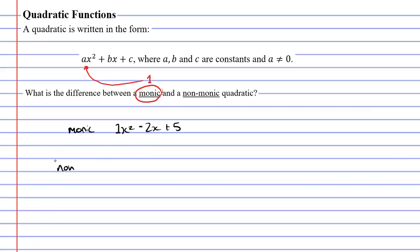A non-monic quadratic is basically all your other quadratics. So you could have 2x squared minus 3x plus 1, or you could have negative x squared plus 2x minus 5, and so on. Some of you might be looking at this quadratic here and thinking, is this a monic quadratic? It actually does have a 1 in front of the x squared. This is technically negative 1 x squared plus 2x minus 5. But when we say monic, it has to be positive 1. So negative 1 means non-monic.